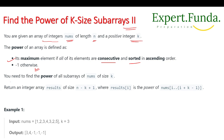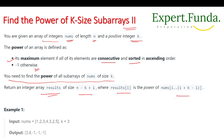We need to find the power of all subarrays of nums of size k. Once we have the result, we return an integer results array of size n minus k plus one, where result at index i is the power of the corresponding subarray. We covered this in the last video.